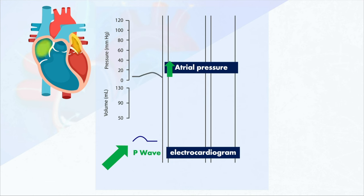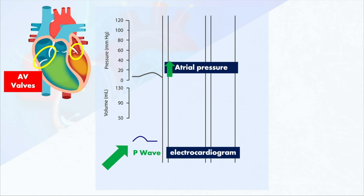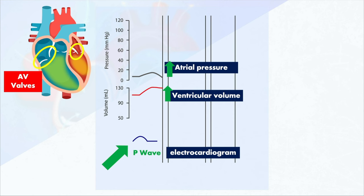That increased pressure is going to push the blood through the valves into the ventricles. The name of these valves is super easy to remember — they're between the atria and the ventricles, so we call them the atrioventricular valves. This brings the last bit of blood into the ventricles. In fact, about 25% of the volume of the blood in the ventricles comes from this last push from the atria contracting.